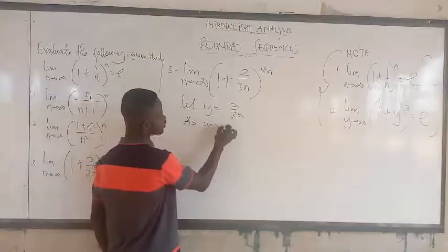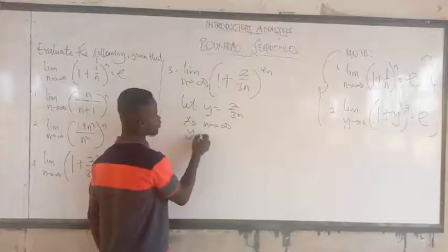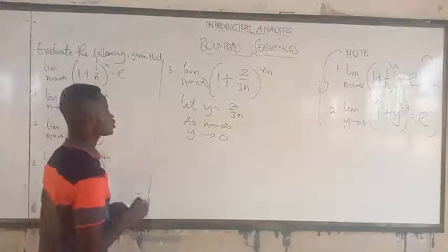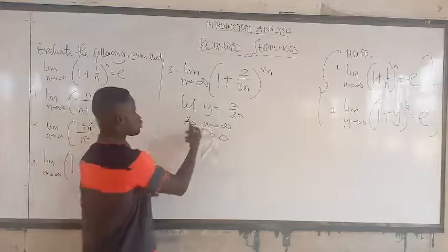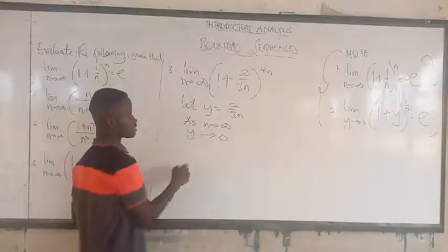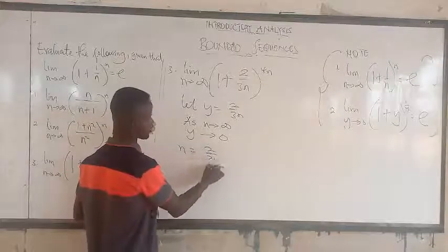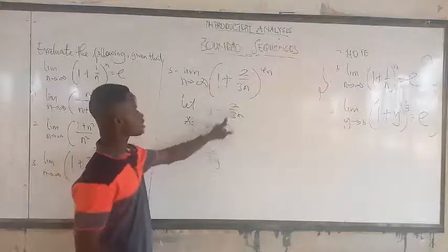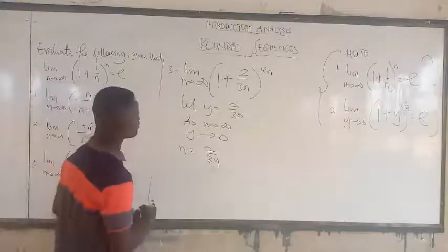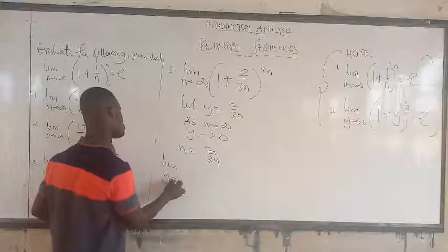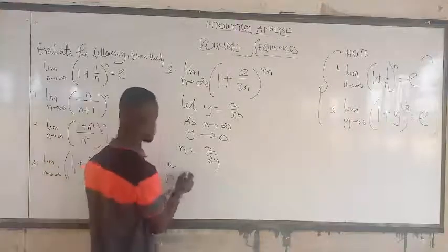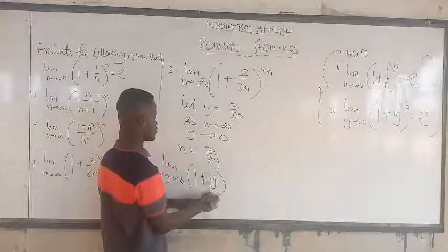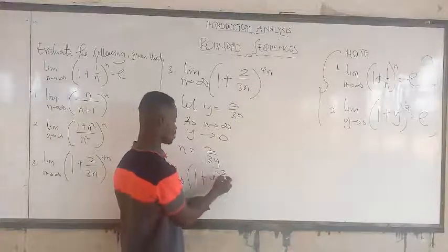As n approaches infinity, y will be approaching 0. We make n the subject: we get n equal to 2 over 3y. By substitution, the limit as y approaches 0 — no more n approaching infinity — we get 1 plus y, raised to the power n, and n is 2 over 3y. So we have 1 plus y to the power 2 over 3y.